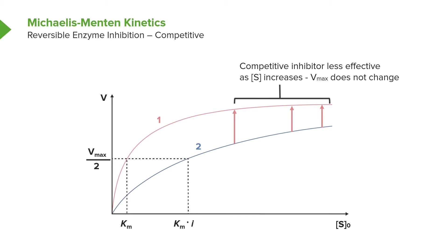Why does a competitively inhibited reaction have the same VMAX as one with no inhibitor? The answer is due to how the experiment was set up — we have a fixed amount of inhibitor. At gigantic concentrations of substrate, it's much more likely the enzyme will encounter the substrate than the inhibitor. At low concentrations they compete well, but at high concentrations where you might have a million times as much substrate as inhibitor, the difference between the uninhibited and inhibited reaction is difficult to see.